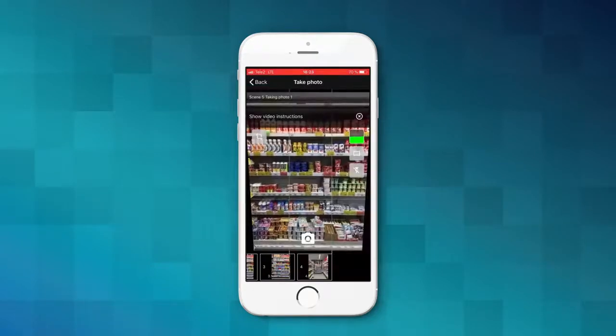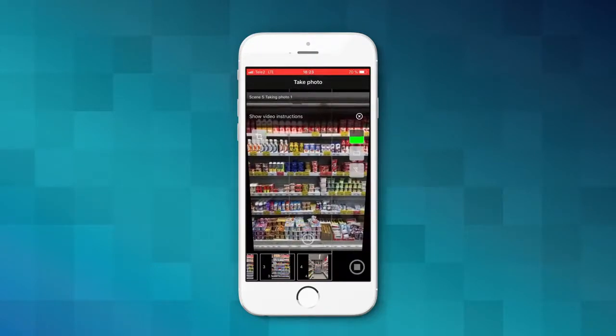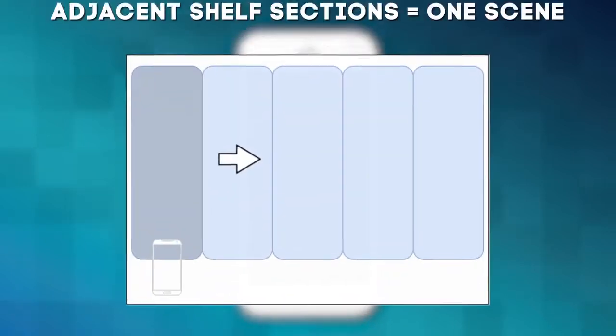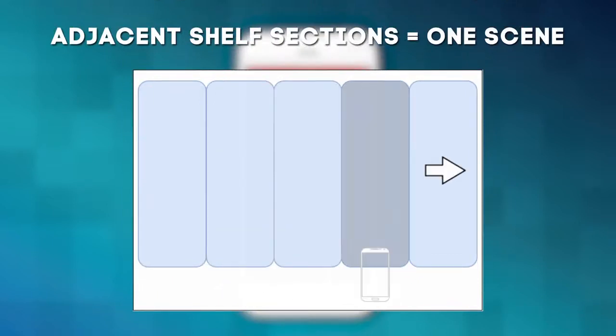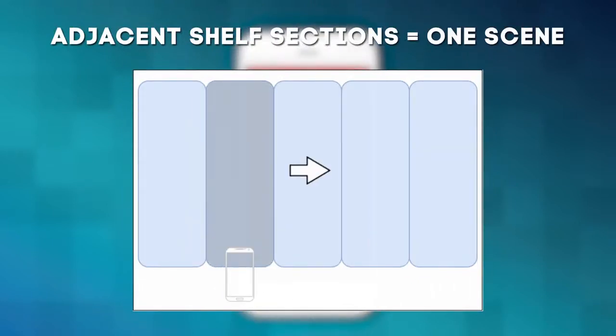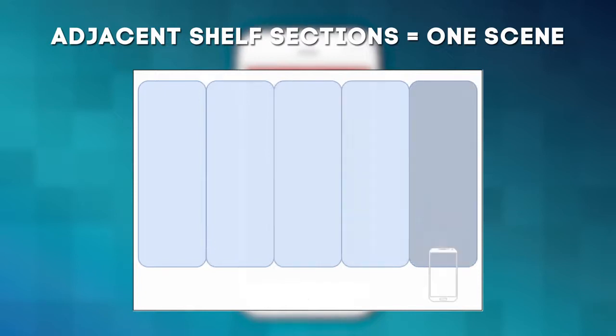The scene shooting. The adjacent shelf sections must be shot in one scene, from the left to the right. At the first shot of the scene, you need to capture one shelf section. In the second, the next, and so on, until the scene ends.